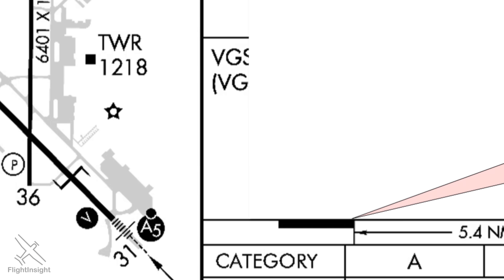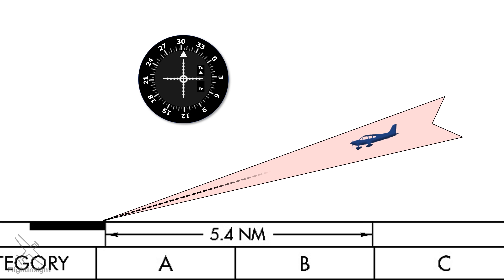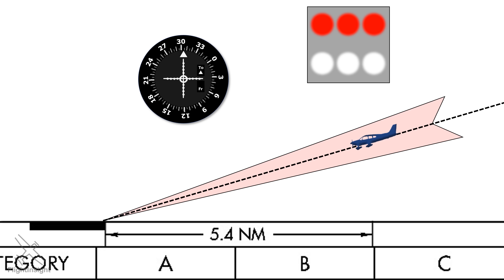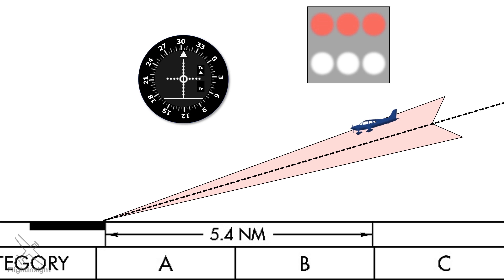A typical glide slope on an ILS approach is set up to be 3 degrees off horizontal. We use our VOR receiver to interpret the signals from the glide slope. Here we are dead center on the glide slope, so the indication on the receiver has the horizontal needle centered up. If we were also looking at the VASI lights, we'd see red over white. If we climb above the glide slope, the horizontal needle starts to move below center incrementally, and the VASI will eventually indicate white over white — we're too high.